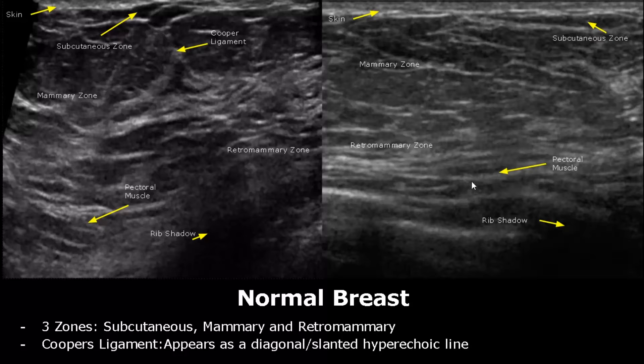The retromammary zone lies between the pectoral muscle and the mammary zone. It usually appears smaller because it is compressed due to probe pressure. This shadowing is due to the rib.